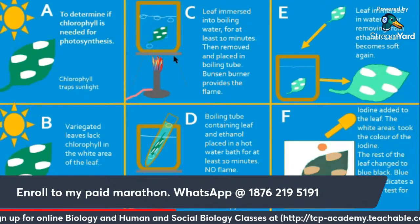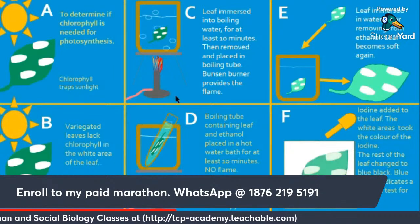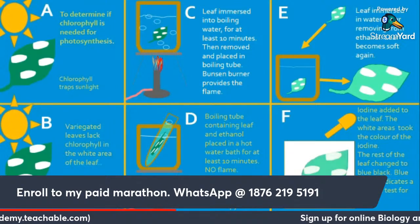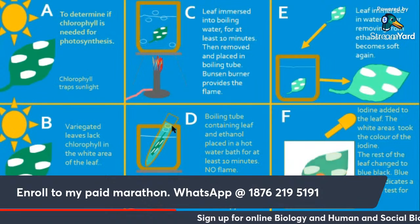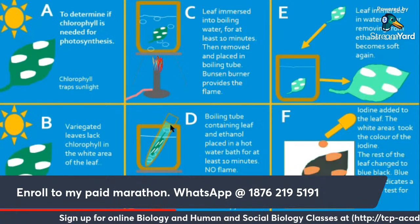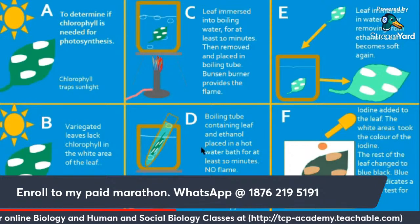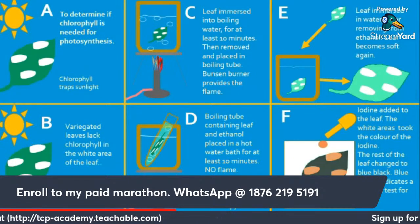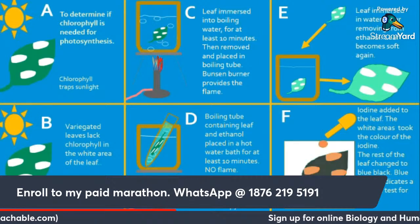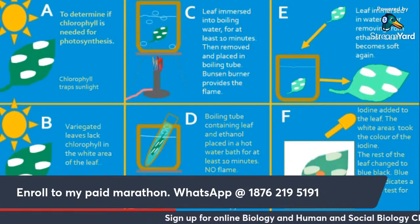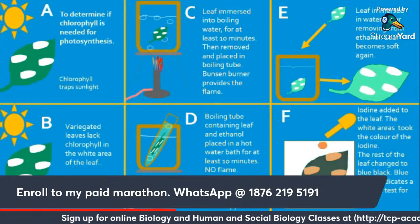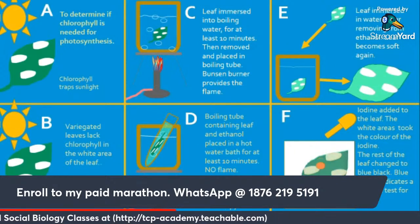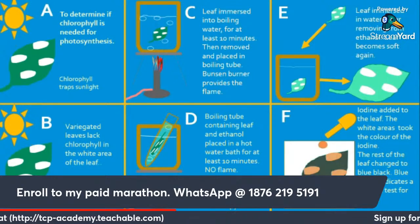In Section D, the leaf is immersed in a boiling tube containing ethanol, placed in a water bath. Water boils at 100°C while ethanol boils at around 78°C; hence if the boiling tube were placed over an open flame there would be a high possibility of fire, causing an accident in the lab.